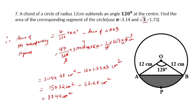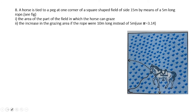For this triangle, we cannot find the height directly — since the central angle is 120°, neither angle A nor angle B can be 90°, as that would violate the angle sum property. That is why we used the angle bisector method. This is an important and interesting question. Now we move to question number 8.